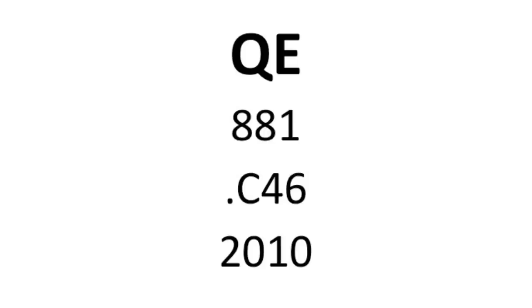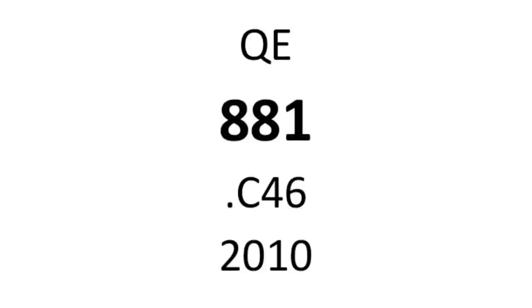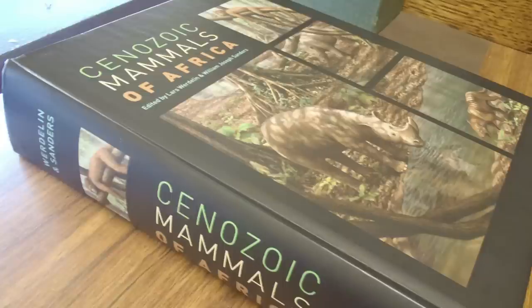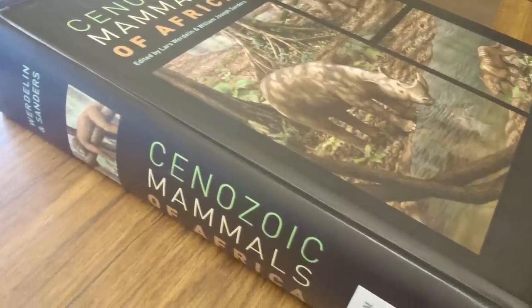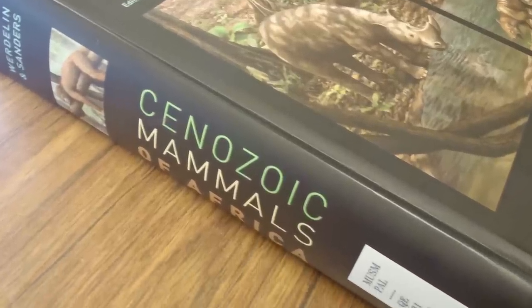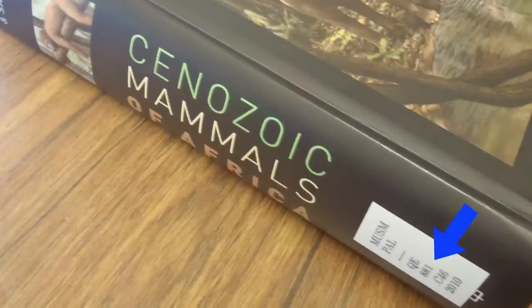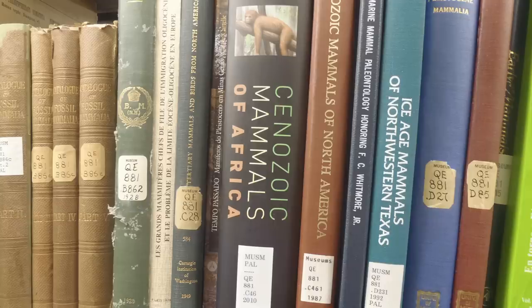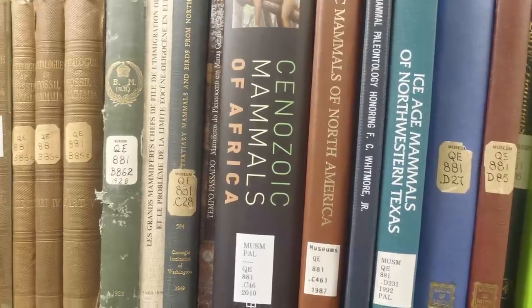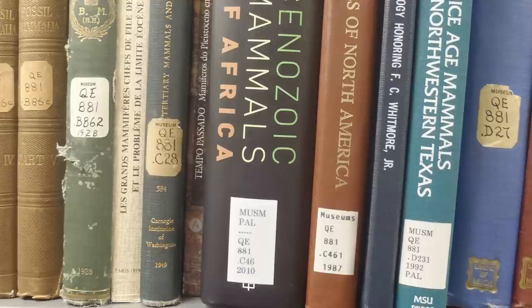QE is for Geology. The next part of the call number is a number to narrow the subject area. For this book, Cenozoic Mammals of Africa, the number 881 indicates a specific area of Paleozoology. To find this book on the shelf, first find the QEs. Then within the QEs, look at the second line of the call number, going in order until you find 881.